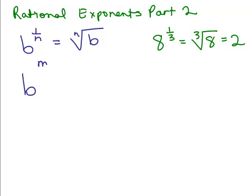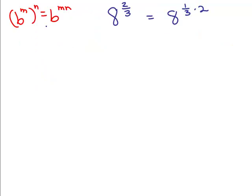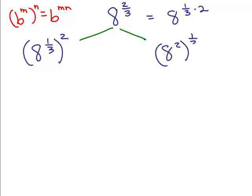Now, what we're going to do is find out what b to the m over n means, where there might not be just a 1 in the numerator. Using the law of exponents — b to the m raised to the nth power is simply b to the m times n — let's say I was going to do 8 to the 2/3. Notice that 2/3 could be written as 1/3 times 2. So there are two ways to think of 8 to the 2/3: I can write it as 8 to the 1/3 squared, or as 8 squared to the 1/3. I'm just using my laws of exponents and the fact that 2/3 is 1/3 times 2.